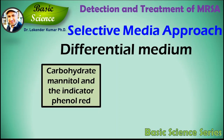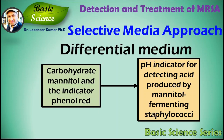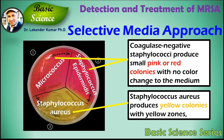MSA is also a differential media for mannitol-fermenting staphylococci, containing the carbohydrate mannitol and the indicator phenol red, a pH indicator for detecting acid production by mannitol-fermenting staphylococci.